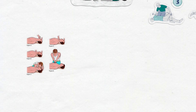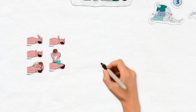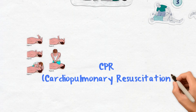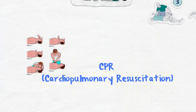If you cannot detect any signs of circulation, start CPR — cardiopulmonary resuscitation. Continue administering CPR until either help arrives or the patient starts breathing on his or her own. If the individual was injured and is bleeding after the fall, apply direct pressure to control the bleeding.